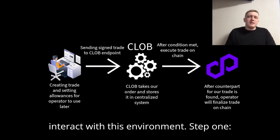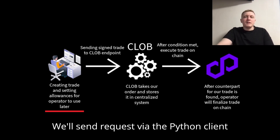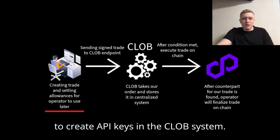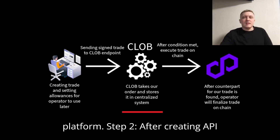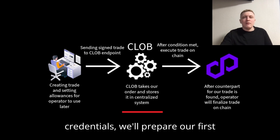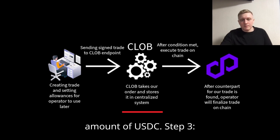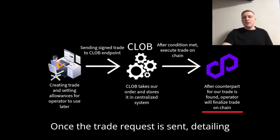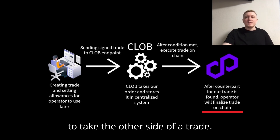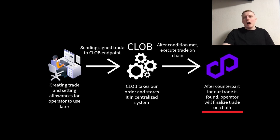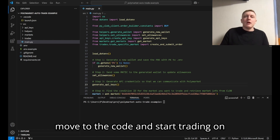Here's how we'll interact with this environment. Step one: using the private key from our wallet, we'll send requests via the Python client to create API keys in the CLOB system. These credentials will enable us to create, publish, and cancel trades on the platform. Step two: after creating API credentials, we'll prepare our first trade by approving the use of a specific amount of USDC. Step three: once the trade request is sent detailing which token we want to buy or sell, the operator will match it with someone ready to take the other side. After that, an on-chain transaction will finalize our trade.